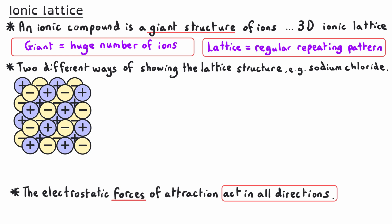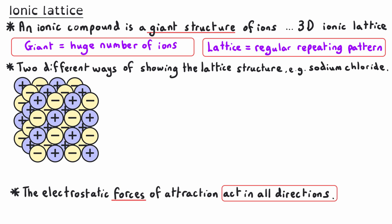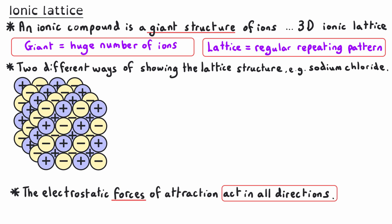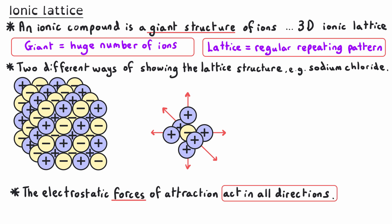Gradually introducing another layer and another shows that this pattern doesn't just repeat in two dimensions — it repeats in three dimensions as well. Every ion has six oppositely charged neighbors, and the electrostatic forces of attraction act between that ion and all six neighbors, so they act in all directions. This arrangement continues in all directions; I'm just showing a small sample of a three-dimensional lattice.